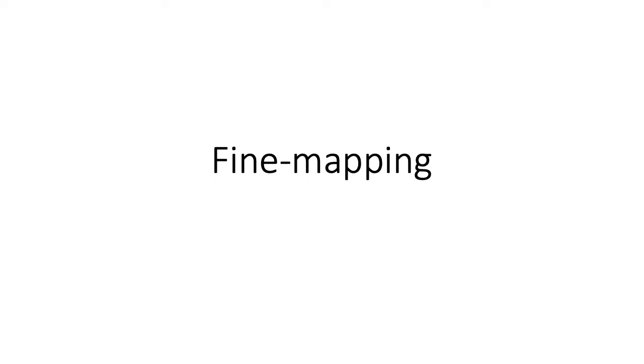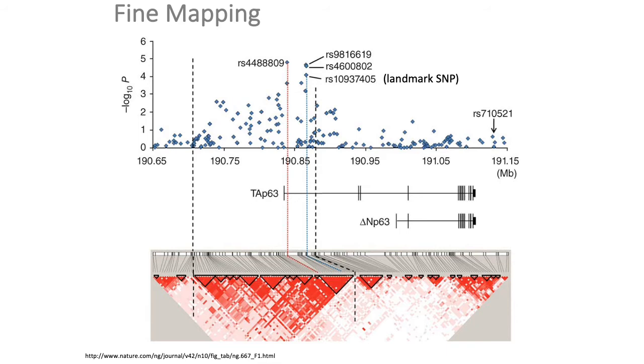I want to spend a few minutes to talk about the process of fine mapping causal loci, which is basically the process of taking a SNP that you've statistically associated with a given complex trait or disease, and now you want to actually figure out which specific variant in that locus is the one truly driving your phenotype.